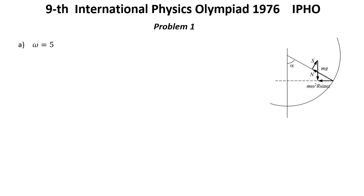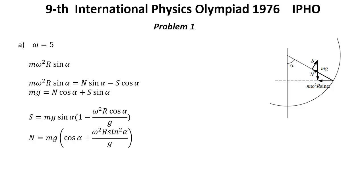The vector sum of the normal force exerted by the wall N, the frictional force S, and the weight Mg is equal to the resultant M omega square R sine alpha. The connections between the horizontal and vertical components are these two equations. The solution of the system of equations are this one.